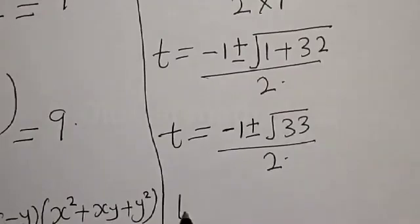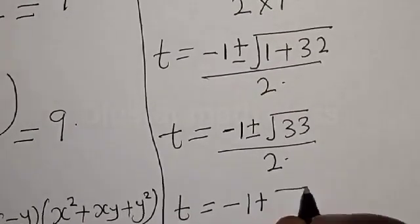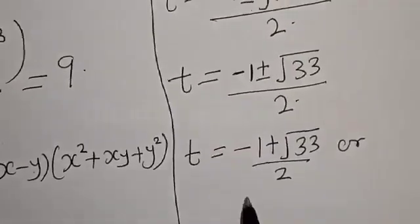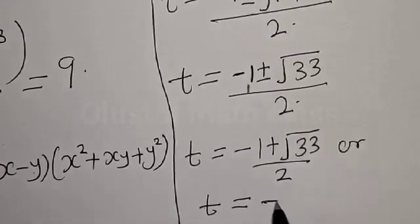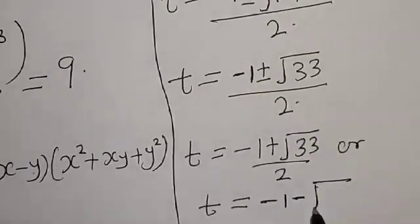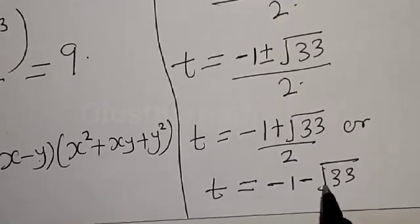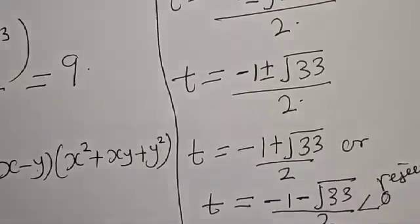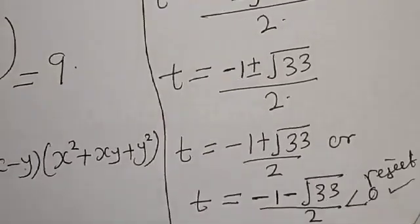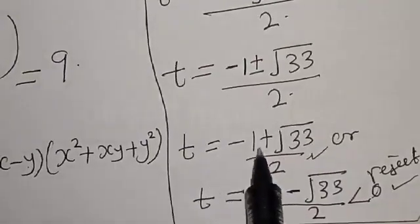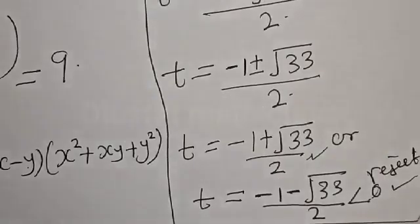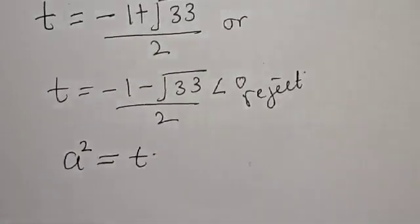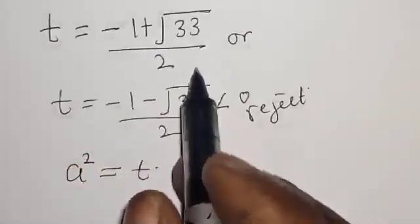Then t equals negative 1 plus square root of 33, divided by 2, or t equals negative 1 minus square root of 33, divided by 2. The second solution gives no real root, so we only accept t equals negative 1 plus square root of 33, divided by 2.